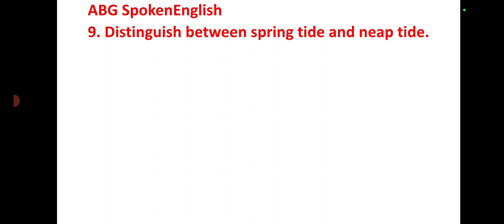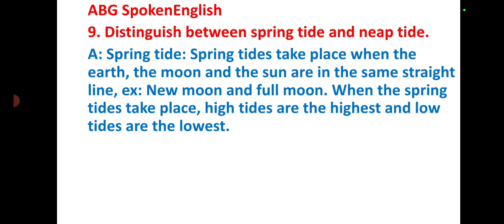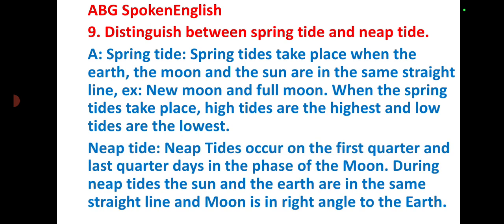Distinguish between spring tides and neap tides. Spring tides take place when the earth, the moon, and the sun are in the same straight line — for example, on a new moon or full moon day. During spring tides, high tides are the highest and low tides are the lowest. Neap tides occur on the first quarter and last quarter days of the moon's phase. During neap tides, the sun and the earth are in the same straight line and the moon is at a right angle to the earth.